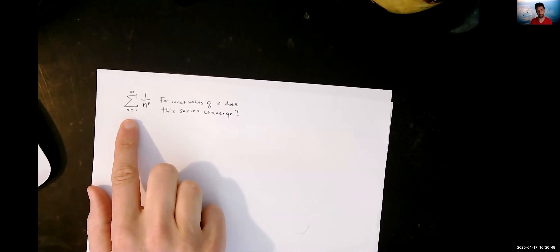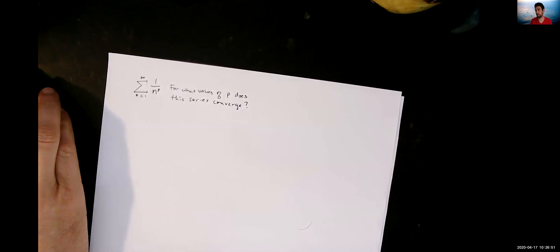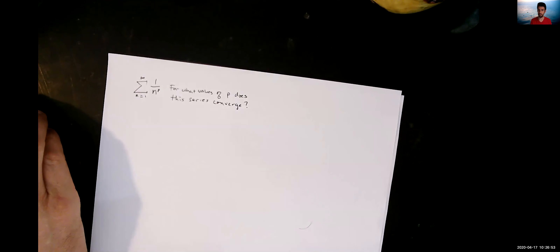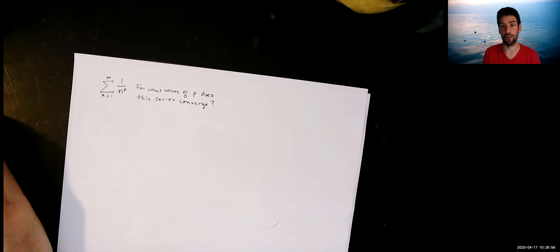In the last video we looked at the integral test for series. In this one, we're going to use the integral test to develop another nice rule, something often referred to as a P-series. We're going to look at the sum as n goes from 1 to infinity of 1 over n to the P, and the question we're going to try to answer is: for what values of P does this converge?